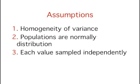In order to construct a confidence interval, we are going to make three assumptions. One, the two populations have the same variance. This assumption is called the assumption of homogeneity of variance. Two, the populations are normally distributed. Three, each value is sampled independently from each other value.